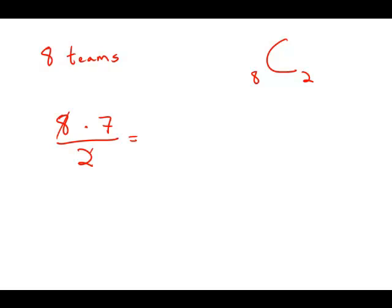So canceling before we multiply, always a good habit. That's four times seven, which is 28. And in fact, that is the value of eight choose two, 28.